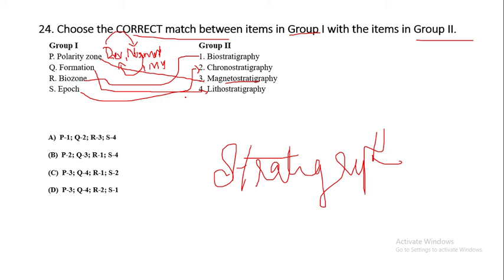These are the fundamental stratigraphic units covered in stratigraphy. The correct matching is: polarity zone → magnetostratigraphy, formation → lithostratigraphy, biozone → biostratigraphy, epoch → chronostratigraphy. The correct option is C (order: 3-4-1-2).